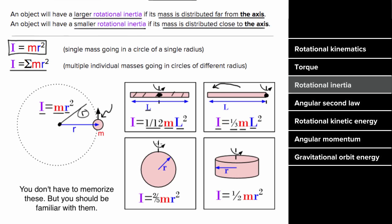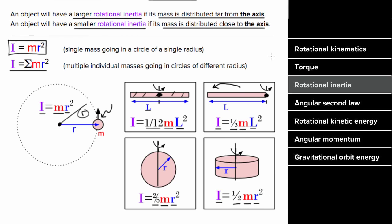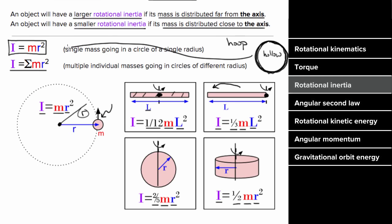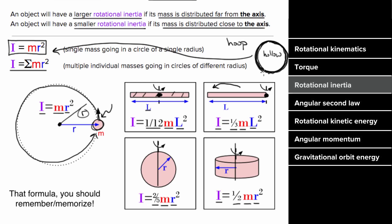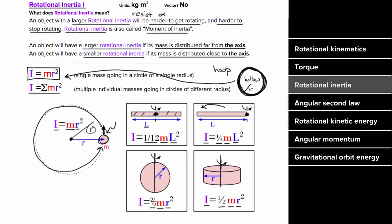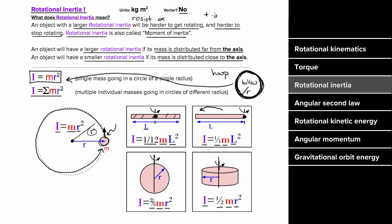The rotational inertia of a solid sphere rotating about an axis through its center is (2/5)MR². For a solid cylinder or disc rotating about an axis through its center, I = (1/2)MR². A hoop, where all mass is distributed at the same radius R around a hollow center, uses the same formula as a point mass: I = MR², since all the mass stays at radius R. Rotational inertia is not a vector — it's always positive or zero — and its units are kilogram-meters squared.